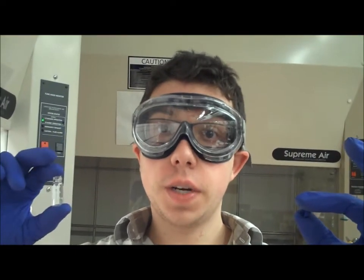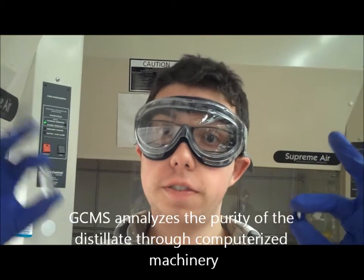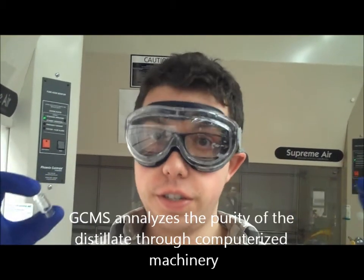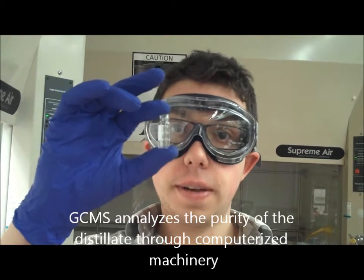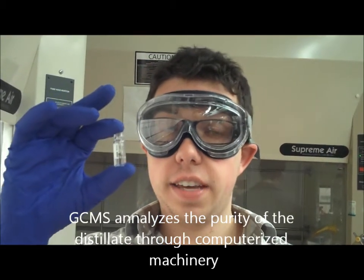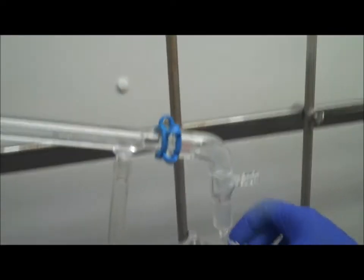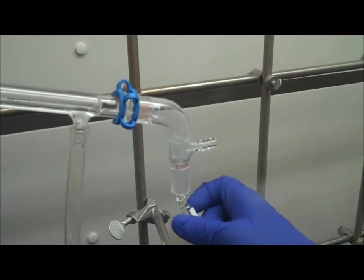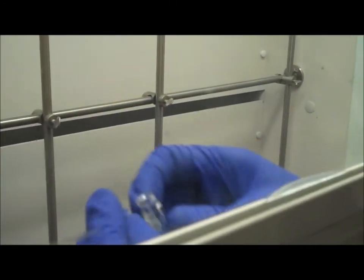Throughout the experiment, there are certain points where you want to take GCMS samples to find out how pure your product is. Here is a GCMS vial. A good place to take a GCMS sample is your first drop of distillate. To take a sample, place the vial under the condenser and collect about two or three drops.